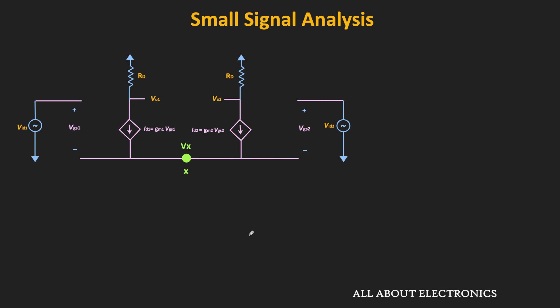Let's call the source node X with voltage vx. Now if these two MOSFETs are perfectly matched, then for a small signal differential input the voltage vx will not change and this node X will act as a ground terminal. If that is the case, the analysis of this circuit becomes very easy. So first let us prove that this node indeed acts as a ground for this small differential input.